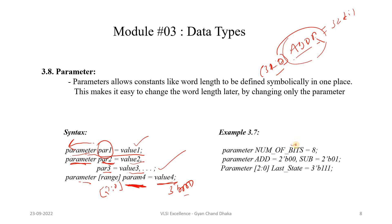For example, parameter number_of_bits = 8; multiple parameters such as parameter add = 2'b00, subtract = 2'b01; and a 3-bit parameter with value 3'b111. If a constant is repeatedly used in a design, replace it with a parameter defined in one place. In future, to change that constant value, just change the parameter value and it will be reflected everywhere in the design.